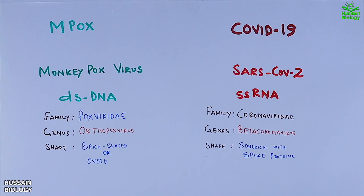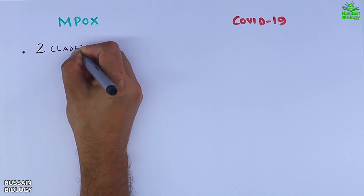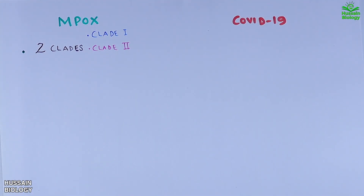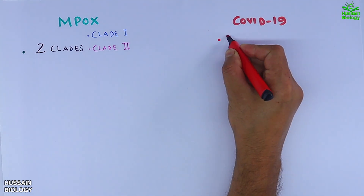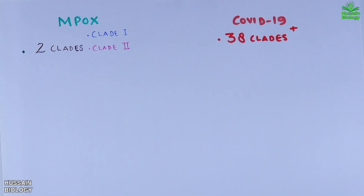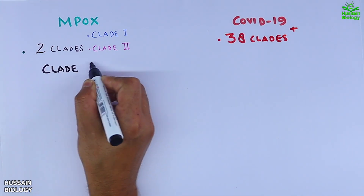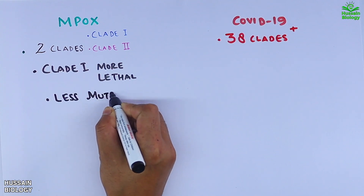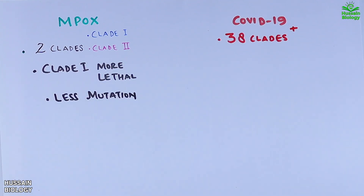For monkeypox we have two clades — clade 1 and clade 2 — each with subclades. For SARS-CoV-2 we have 38 plus clades as of mid-2024, also with subclades. Clade 1 of monkeypox virus is more lethal than clade 2, and the monkeypox virus has seen fewer mutations compared to SARS-CoV-2.